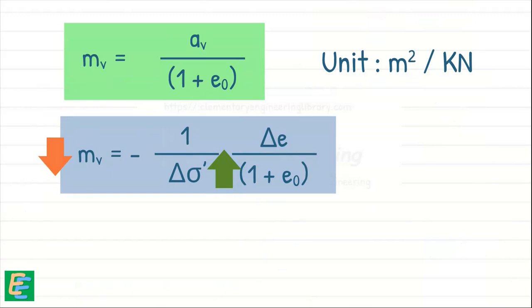While AV provides similar information about the soil compressibility, MV is more commonly used in practice. This is because MV directly relates the change in volume of a soil to the change in effective stress.